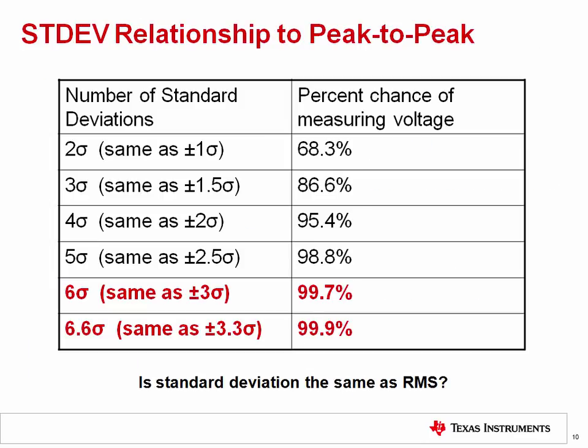The table shown here relates the number of standard deviations to the probability that a measurement is bounded by this range. For example, there is a 68.3% chance that any instantaneous noise measurement will be in the range of 2 sigma or plus or minus 1 standard deviation. 6 sigma and 6.6 sigma are common ways of estimating the peak-to-peak noise. In the case of 6 sigma, for example, there is a 99.7% chance that any instantaneous measurement will occur within that range. Thus, the chance that a noise reading is outside this limit at any instant in time is only 0.3%. The 0.3% probability is considered to be negligible, so 6 sigma is often used as an approximation for peak-to-peak noise.